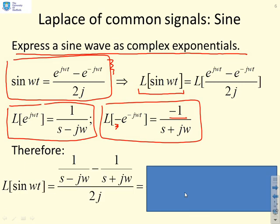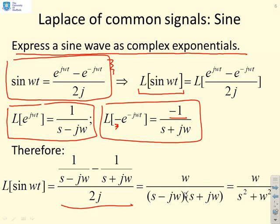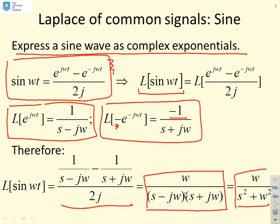Putting those together, the Laplace of sin(ωt) is given by [1/(s − jω) − 1/(s + jω)] / 2j. Giving it a common denominator yields ω / [(s − jω)(s + jω)], and multiplying out the denominator gives ω / (s² + ω²). That is the key result to remember: the Laplace of sin(ωt) equals ω / (s² + ω²).